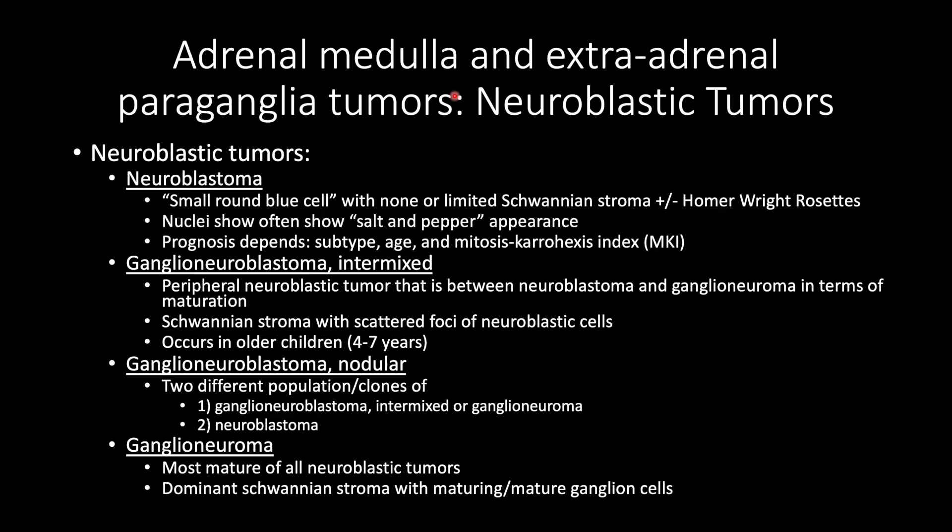Neuroblastic tumors, according to the WHO 5th edition, consist of neuroblastoma — small round blue cells with no or limited Schwannian stroma, plus or minus Homer Wright rosettes. Nuclei often show a salt and pepper appearance, and prognosis depends on the subtype of neuroblastoma, the age of the patient upon diagnosis, and mitosis karyorrhexis index, now known as MKI.